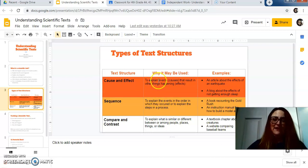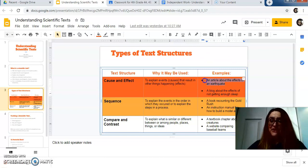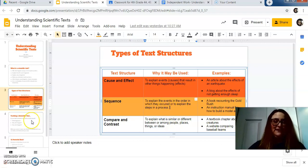So remember, cause and effect explains events that result in other things happening. So perfect example with science, right? If you're explaining why did the Ice Age happen, there would be a cause and there would be an effect. And this is another example, an article about the effects of an earthquake. That would be a scientific text. Sequencing is explaining events in the order they have been or a step in a process. So it's going to be a combination of these things when you read a scientific text.